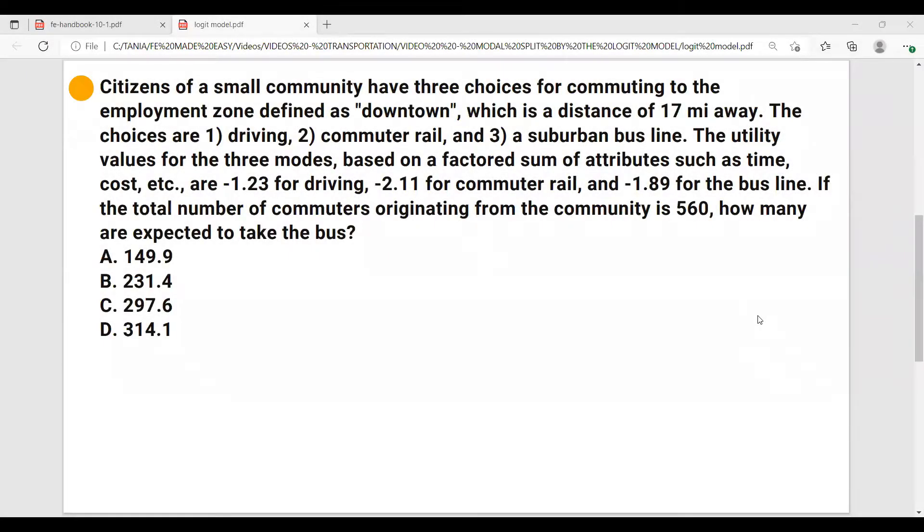Now let's move on with our example. It is: A small community, you have three choices for commuting to the employment zone defined as downtown, which is a distance of 17 miles away. The choices are 1) driving, 2) commuter rail, and 3) a suburban bus line. The utility values for the three modes based on a factored sum of attributes such as time, cost, etc. are -1.23 for driving, -2.11 for commuter rail, and -1.89 for the bus line. If the total number of commuters originating from the community is 560, how many are expected to take the bus?